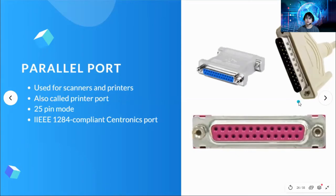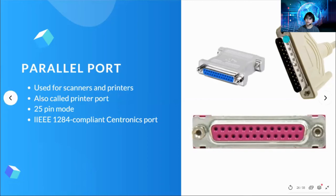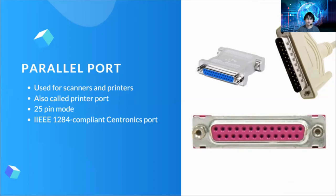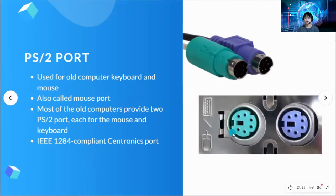Next is parallel port. It is used for scanners and printers, also called the printer port. It has a 25-pin mode and is IEEE 1284 compliant Centronics port. We also have PS2 ports. PS2 ports are used for old computer keyboards and mice, also called the mouse port. Most old computers provide two PS2 ports, each for the mouse and keyboard.